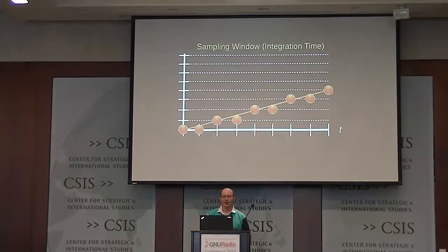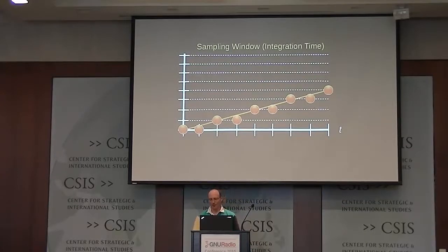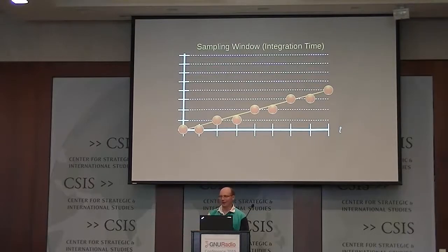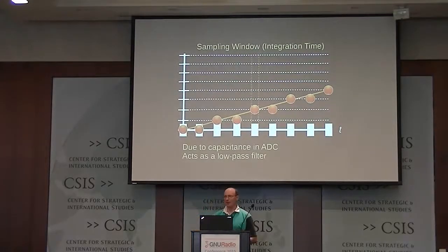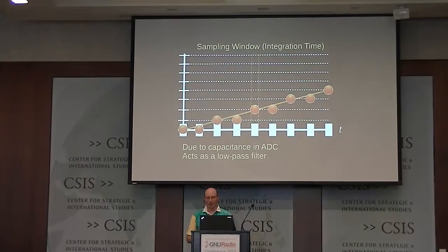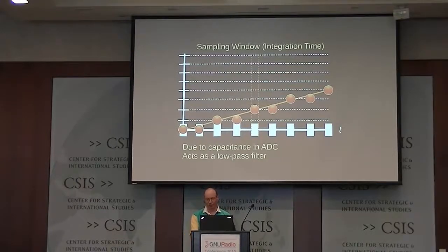One final thing on sampling: sampling doesn't really happen at an exact time. If it did, you'd get aliasing all the way up to gamma rays and have to deal with all that noise. In reality, there's capacitance in analog circuitry and in the ADCs themselves, so you're really looking at an average of the signal over a certain amount of time. There's actually a type of distortion this introduces.